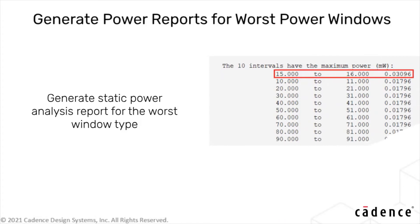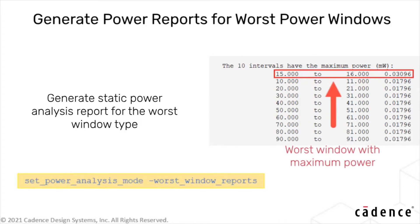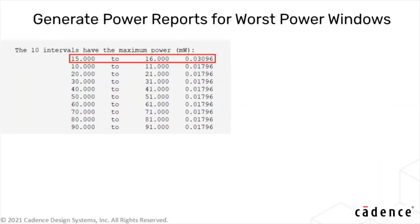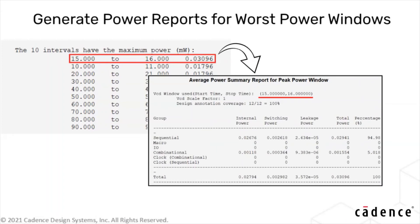Users can now seamlessly generate static power analysis reports for the worst window type. This feature is enabled by the worst_window_reports parameter of the set_power_analysis_mode command. The parameter gives you the flexibility to either create the static power report for the full simulation window, the worst window, or both.